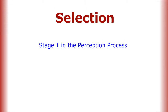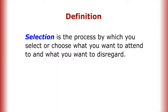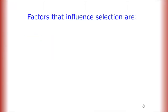Selection is the first stage in the perception process. Selection is the process by which you select or choose what you want to attend to and what you want to disregard. Factors that influence selection are stimuli or motives.